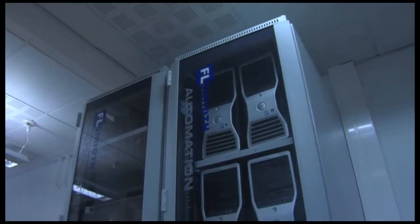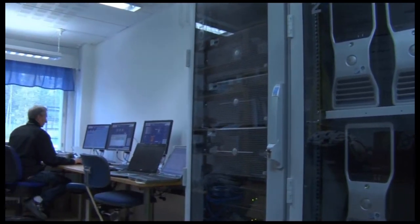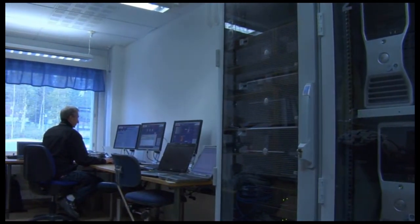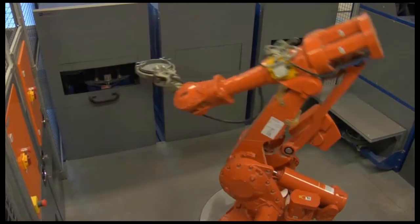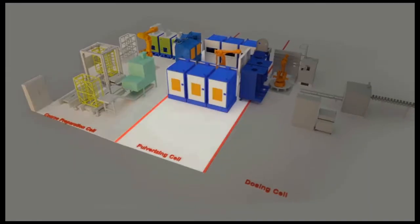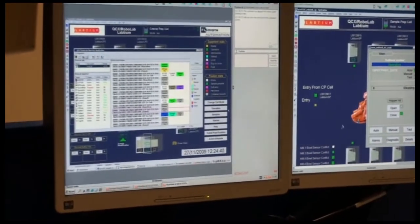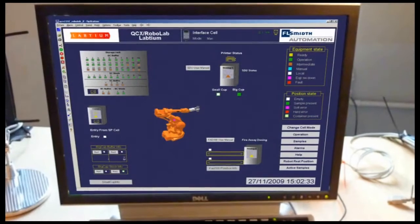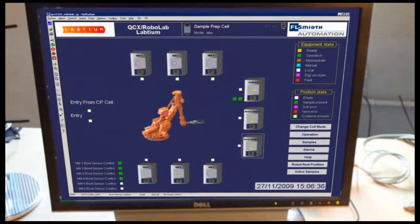The server room is the heart of the QCX RoboLab. Here, three PC servers ensure that the system is in full operation at all times. Even though the QCX RoboLab operates as one system, each cell is in fact controlled by its individual server PC. This software layout ensures greater flexibility and high efficiency during commissioning, as one cell can be commissioned independently of the other cells.